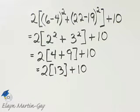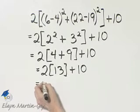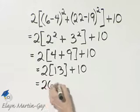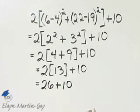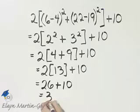And now what are our choices? Multiplication or addition? Multiplication is higher in order of operations. 2 times 13 is 26 plus 10. And then 26 plus 10, that is 36.